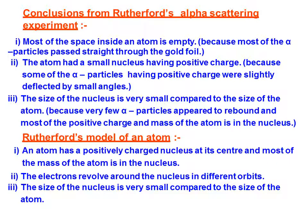Rutherford model of an atom: an atom has a positively charged nucleus at its center, and most of the mass of the atom is in the nucleus. The electrons revolve around the nucleus in different orbits. The size of the nucleus is very small compared to the size of the atom.